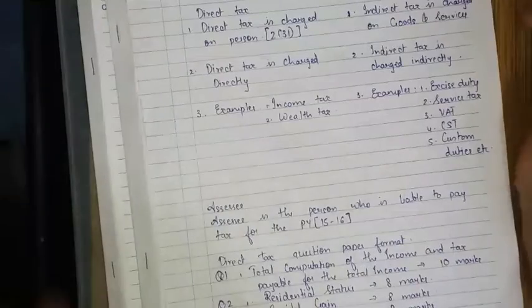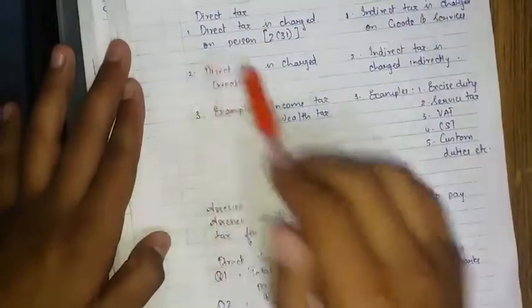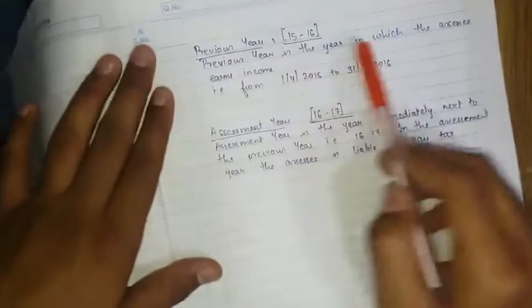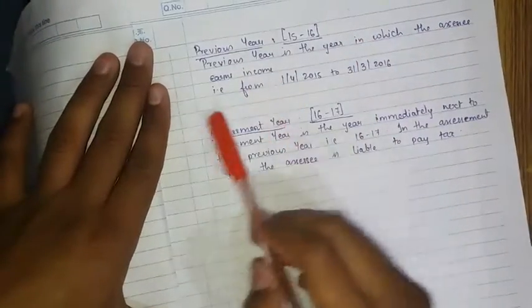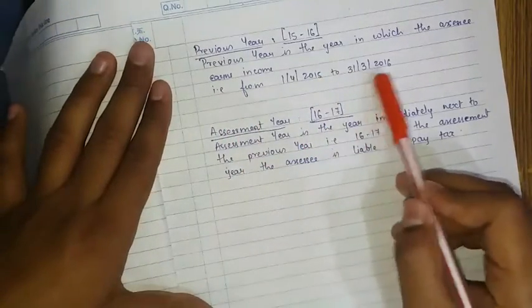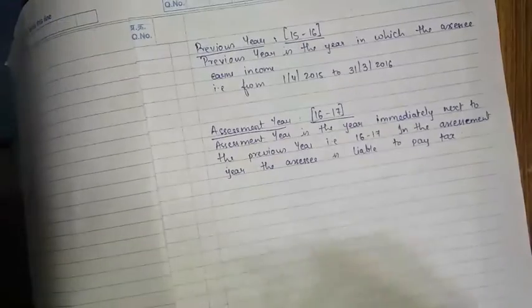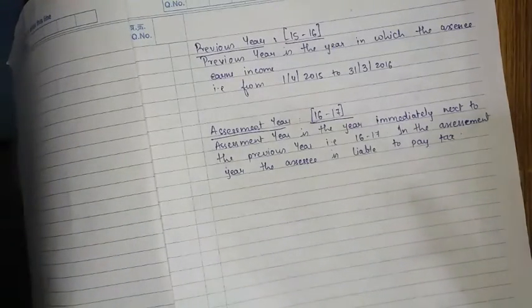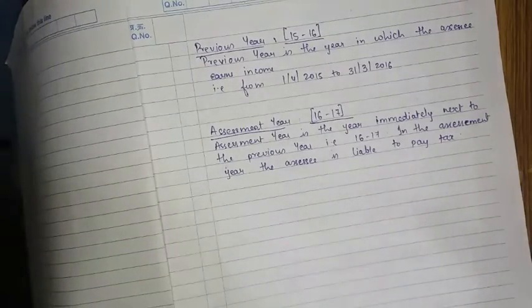Write 'Taxation - Direct Tax Theory'. Start with this first. Second, write 'Previous Year'. In that, previous year is the year in which the SAC earned the income. Previous year means the year that is from 1st April 2015 to 31st March 2016. That is the previous year that has passed - in that we have earned the income.